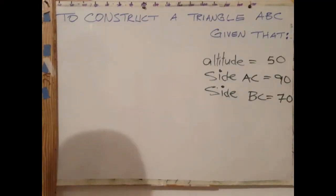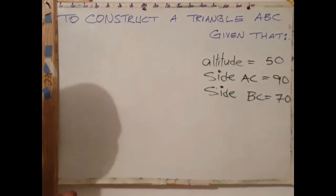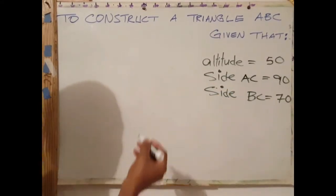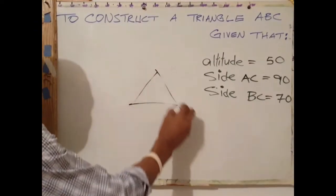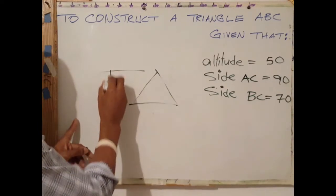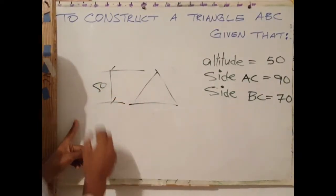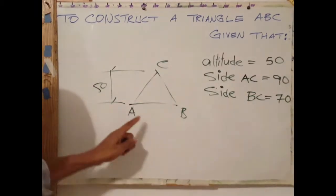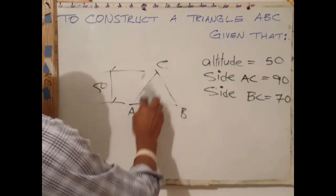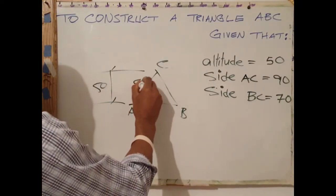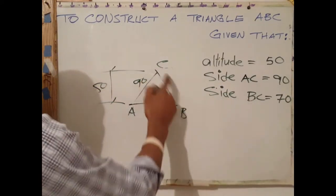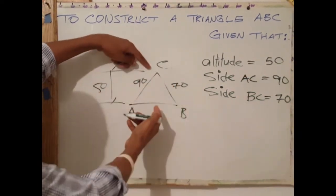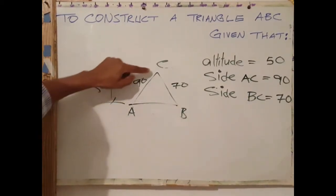To construct a triangle ABC given that the altitude is 50 millimeters, side AC is 90 millimeters, and side BC is 70 millimeters. The altitude is the vertical height of the triangle. We have side AC at 90mm and side BC at 70mm, and we also have the vertical height which is the altitude.